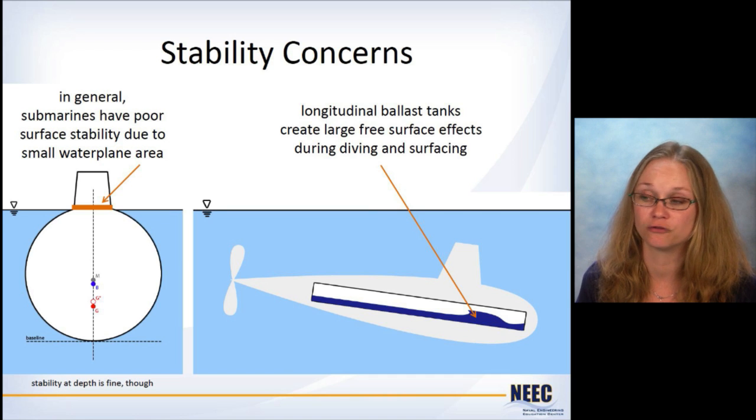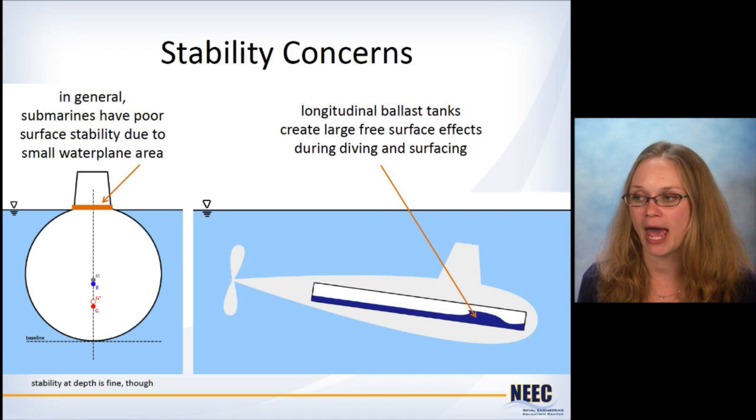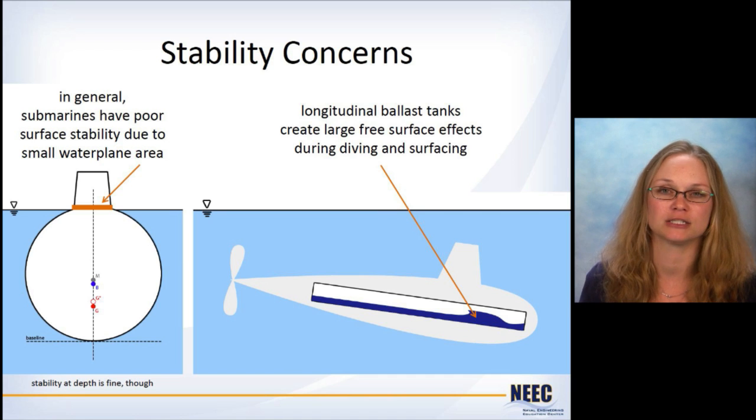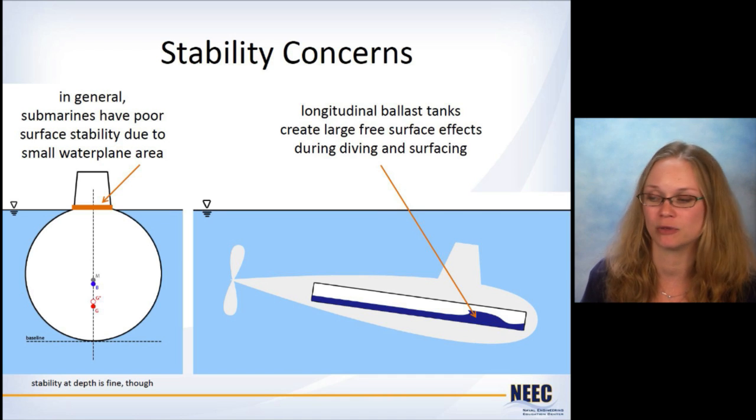When we talked about in that other lecture where we said, free surface effect, very bad. What we'll do is for transverse stability, we'll make it so that instead of having wide tanks, we'll have long, narrow tanks. And that way there won't be as much sloshing and there'll be lower free surface effects and we will have a stable ship. Excellent.